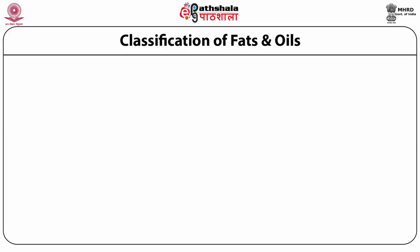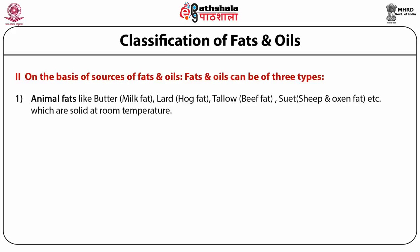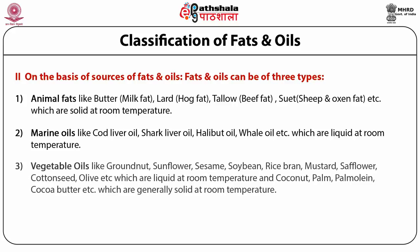The second classification of fats and oils is based on sources. On this basis fats and oils can be divided into three categories. The first is animal fat — examples are butter (milk fat), lard (hog fat), tallow (beef fat), and suet (sheep and oxen fat); these are all solid at room temperature. The second class is marine oils like cod liver oil, shark liver oil, halibut oil and whale oil — all liquid at room temperature. The third is vegetable oils like groundnuts, sunflower, sesame, soya bean, rice bran, mustard, safflower, cottonseed and olives — all liquid at room temperature — while some vegetable oils like coconut, palm, palmolein and cocoa butter are generally solid at room temperature.